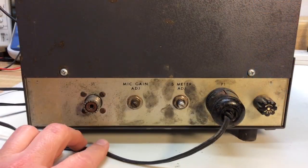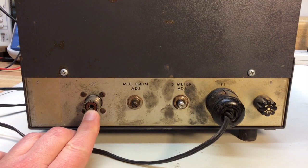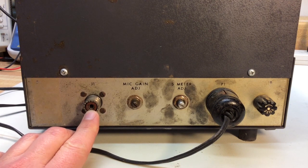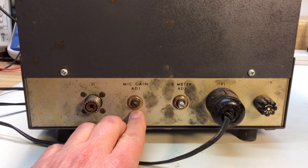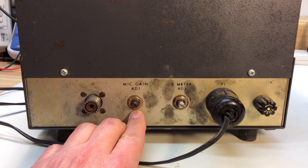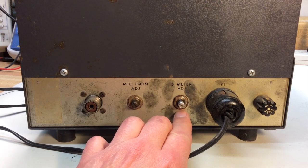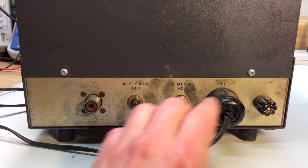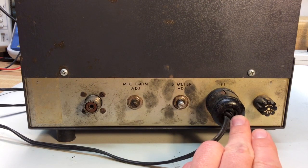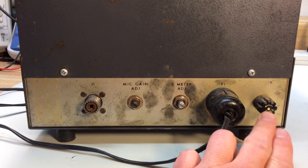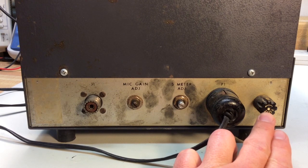We'll go ahead and take a look at the rear panel. We have the antenna jack here on the left, and then there's a mic gain adjustment. You can set your mic level. And then here's the S-meter adjust control. And then we have the power and accessory jack. You can use an external VFO here if you want to, and the fuse holder.